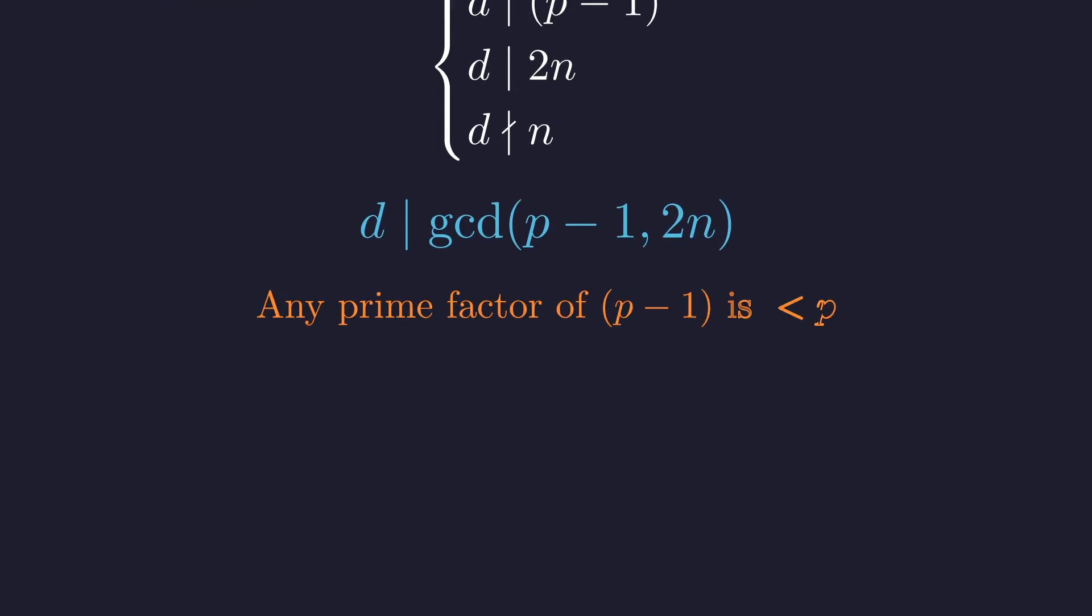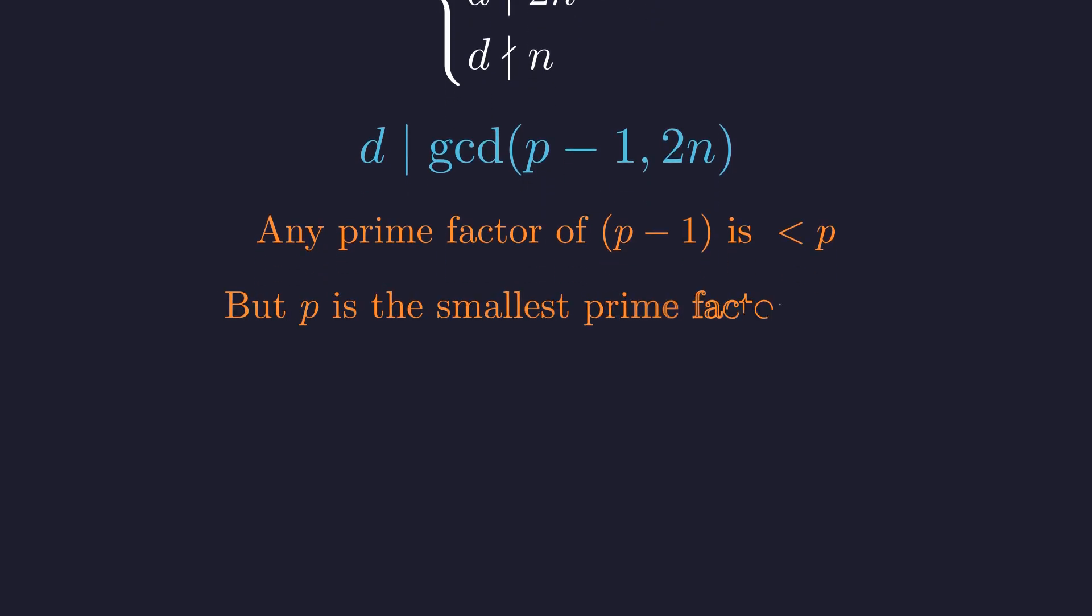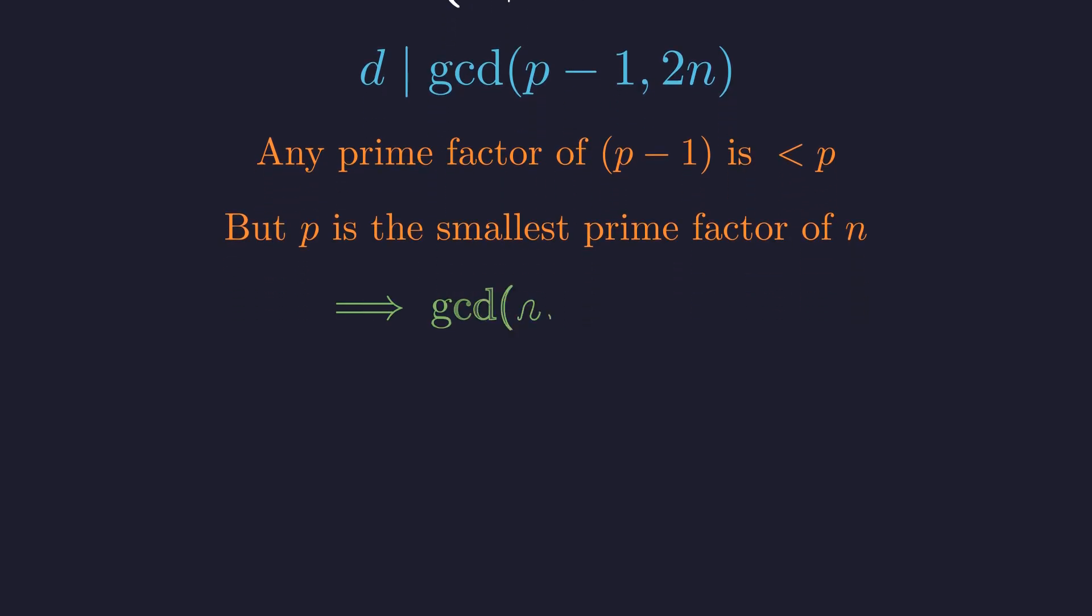Here's why. Any prime factor of p minus 1 must be strictly smaller than p itself. But p is the smallest prime factor of n, so no prime smaller than p can divide n. This forces a remarkable conclusion. n and p minus 1 share no common prime factors. They are coprime.